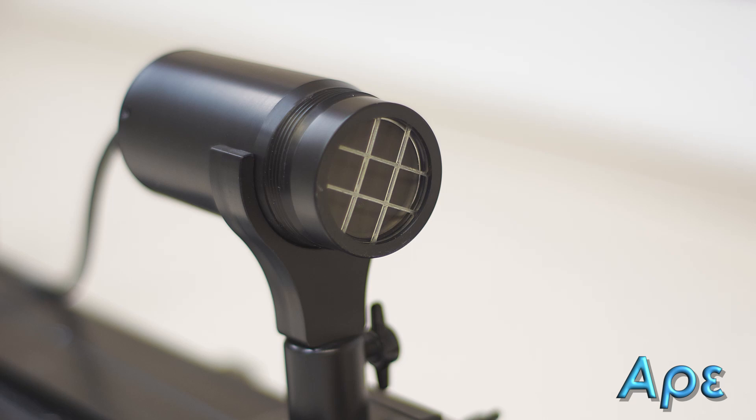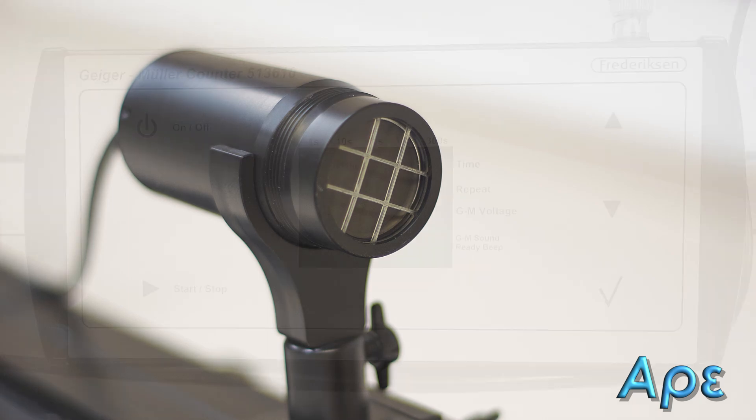Inside the GM tube are a pair of electrodes with a large potential difference across them provided by the counter, usually around several hundred volts. The free electrons created by the ionizing radiation are attracted to the positively charged anode and flow around a circuit through a resistor which creates a small signal that can be read by the counter.